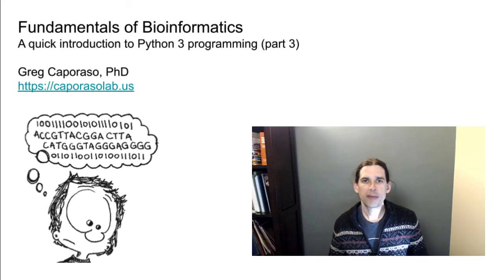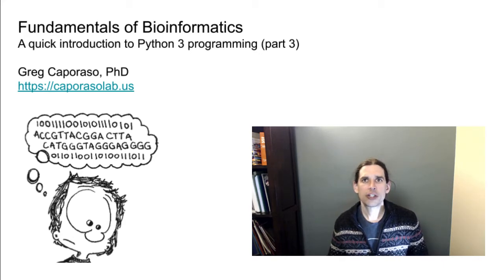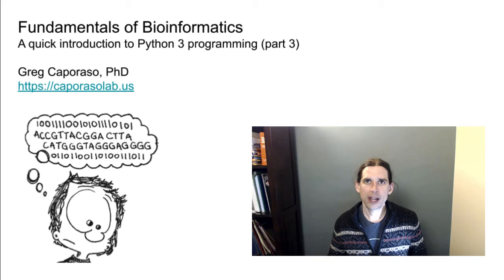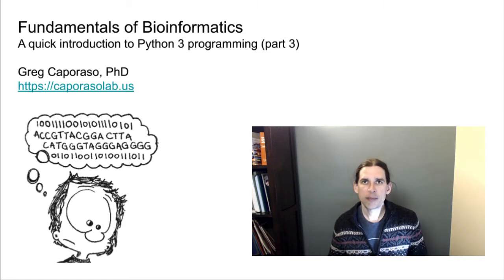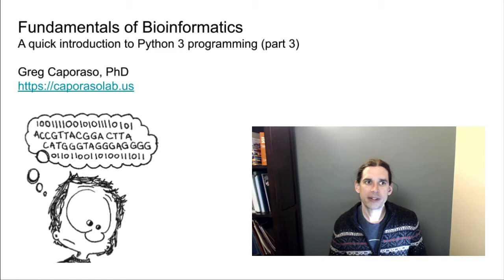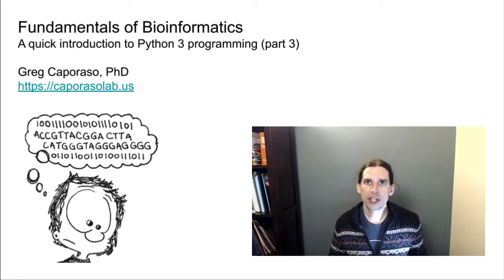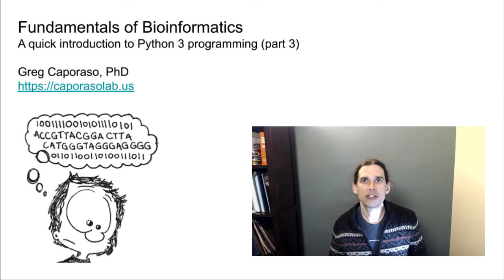Hi, and welcome back to Fundamentals of Bioinformatics. This is the third lecture in my quick introduction to Python 3 programming series. In this lesson, we are going to revisit some of the topics we covered at the end of the last lecture — that's going to include a review and new ideas around for loops. We'll then talk about conditional statements, and wrap up by writing a function that translates DNA sequences into protein sequences.